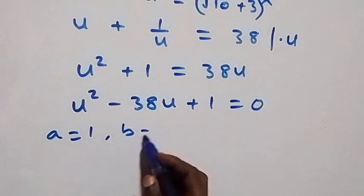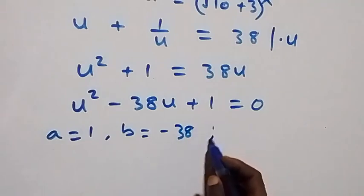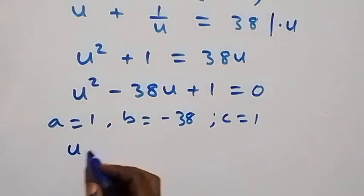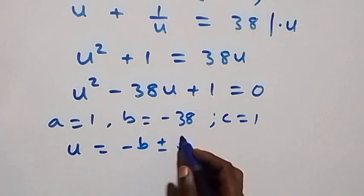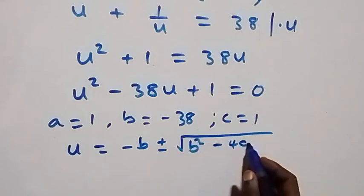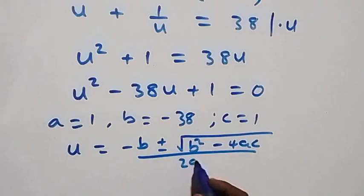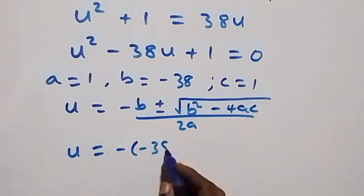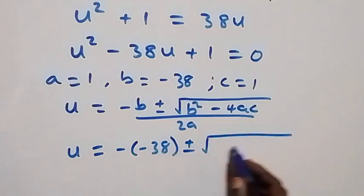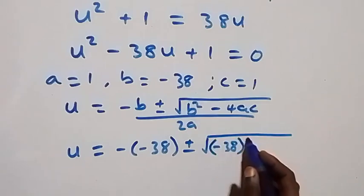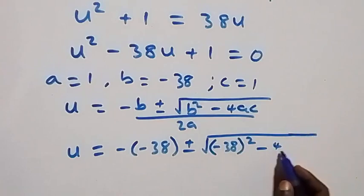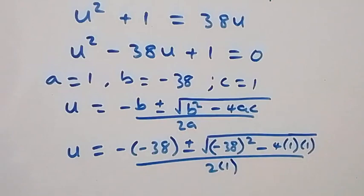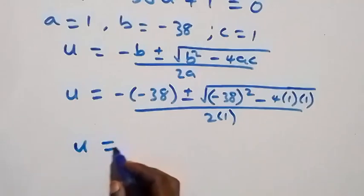This gives us a quadratic equation where a equals 1, b equals -38, and c equals 1. From the quadratic formula, u equals (-b ± √(b² - 4ac)) / 2a, we substitute to get u equals (38 ± √(38² - 4·1·1)) / (2·1).